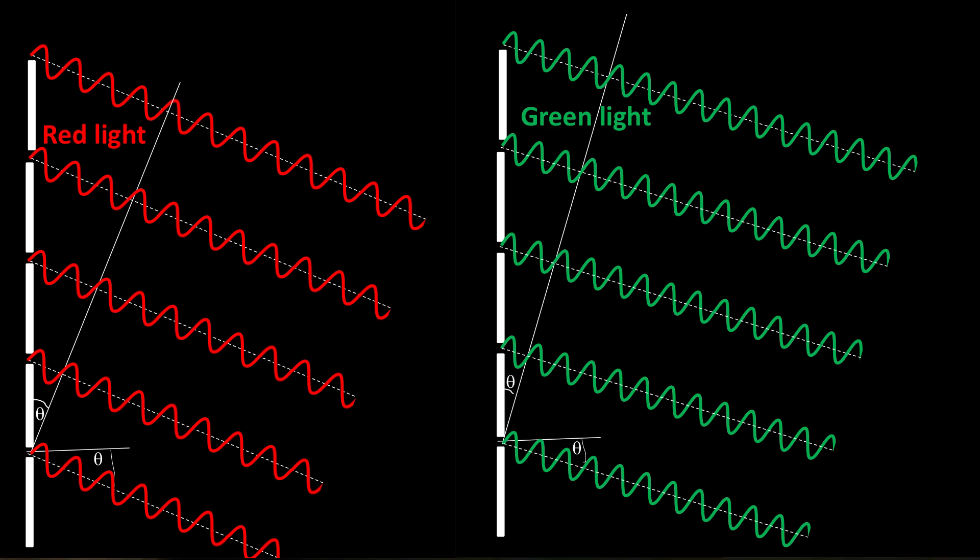This means that all the waves once again arrive in phase, doing the same thing at the same time, and they constructively interfere to once again make bright light. In the diagrams, we can see that because the wavelength of green light is shorter than for red light, the angle at which the path difference between adjacent slits is one wavelength is smaller for green light. So the first-order beam for green light occurs at a smaller angle than for red light.